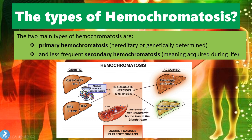In primary hemochromatosis, genetic defects occur at specific chromosomes in the body. A few specific gene mutations have been recorded that can be attributed to the development of the disease, and those include the HFE mutation, the HJV mutation, the TFR2 mutation, and the HAMP mutation — all of which cause primary hemochromatosis.